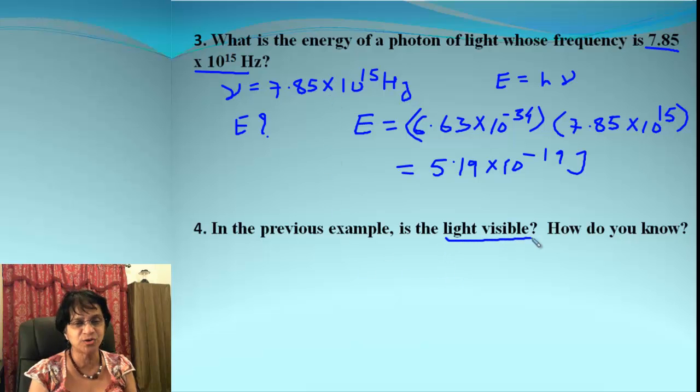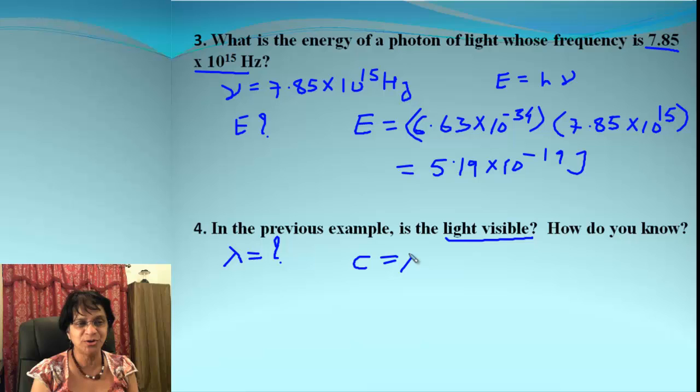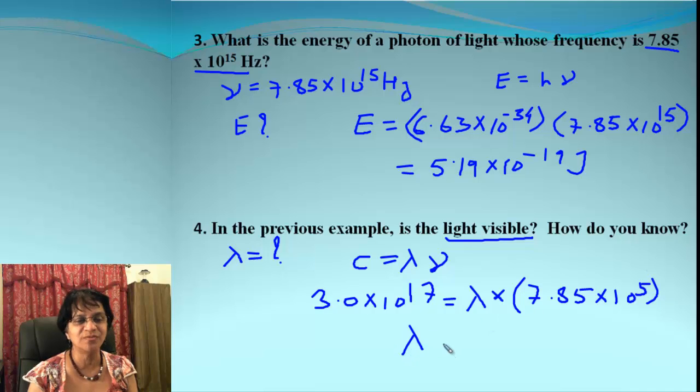The second part of the question is: is the light visible? We can find out that only if we know what is the wavelength. For that we have to use the equation. Let's find out what wavelength is. When we plug the value, this is what we got, and when we simplify, the value of lambda is 38.2. Obviously this is not in the visible range of 400 to 700 nanometers.